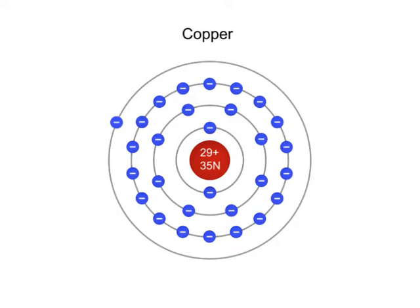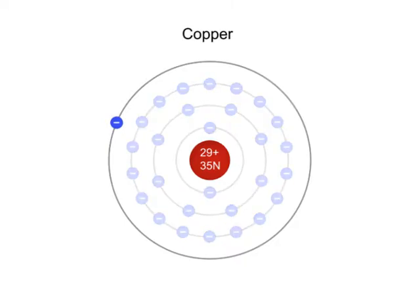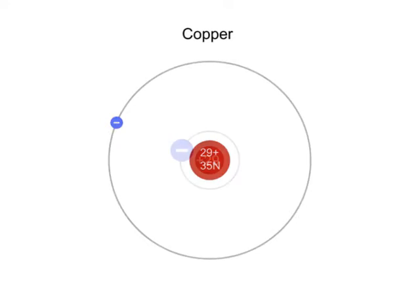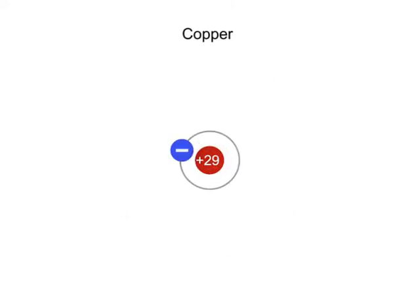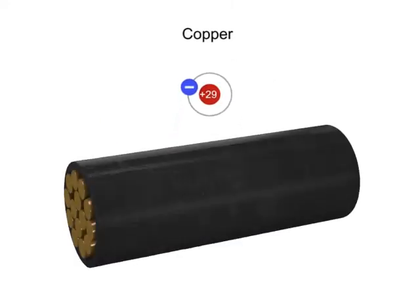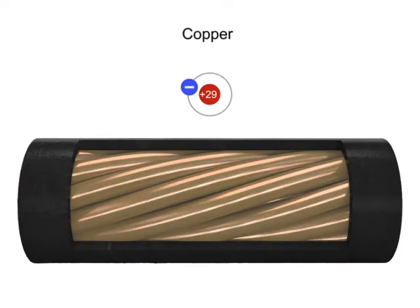Let's take a more detailed look at how these free electrons flow when a voltage is applied across a copper wire. Taking a simplified version of a copper atom with its single valence electron, let's distribute copper atoms along the length of a copper wire.